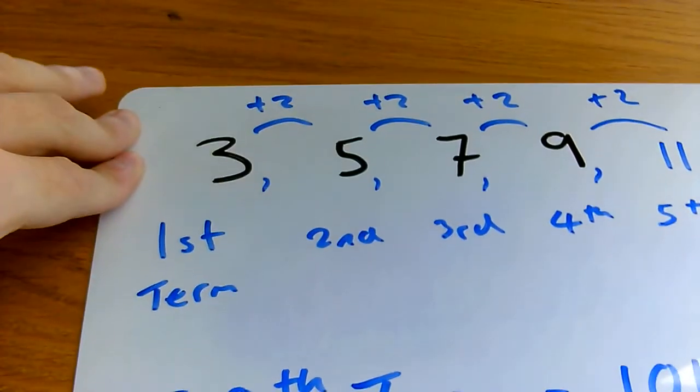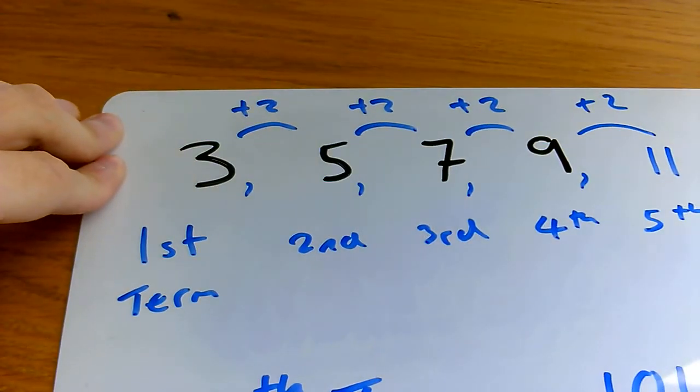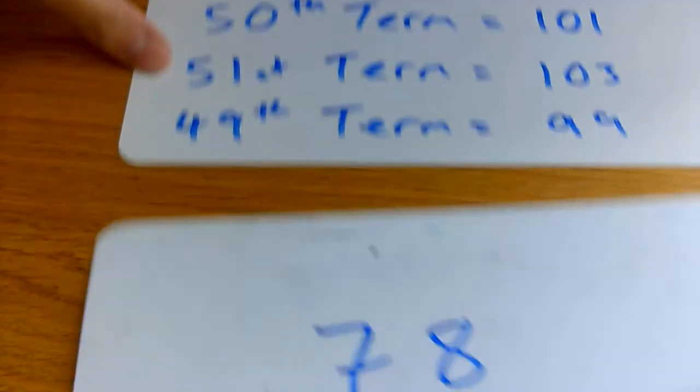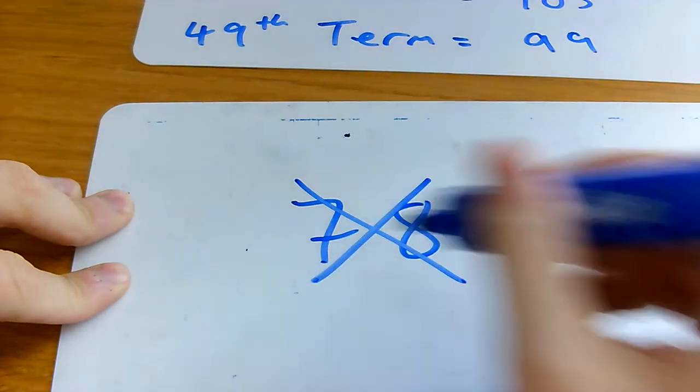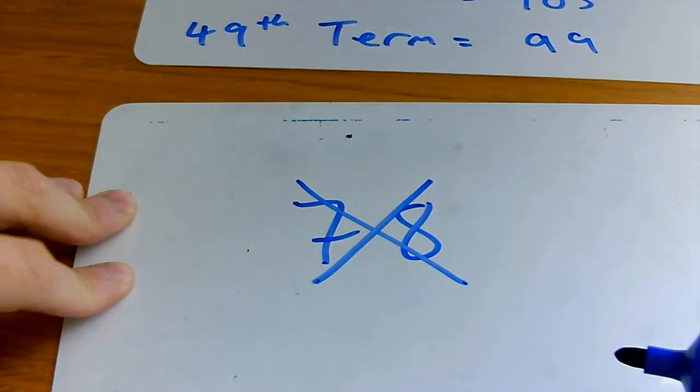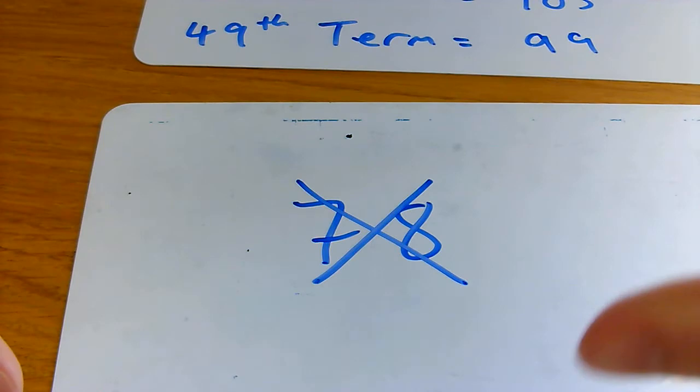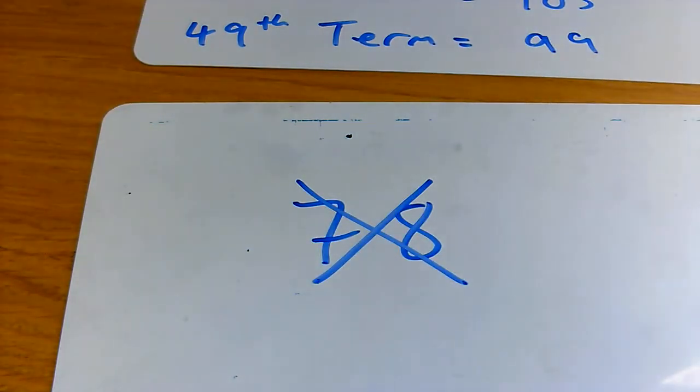The pattern with these is that they're all just odd numbers, and 78, well, it's not an odd number, is it? So no, I don't think we're going to see that in the sequence. And not all sequences are this simple. You'll see some similar ones, but maybe the sequence has a more complicated rule, but they'll always have some sort of pattern. And you can use that to work out whether you will see certain numbers or not.